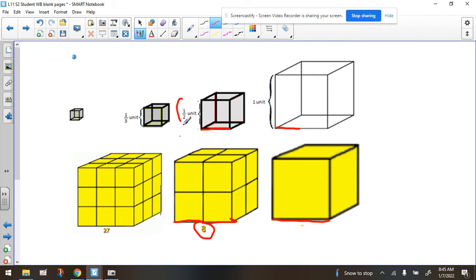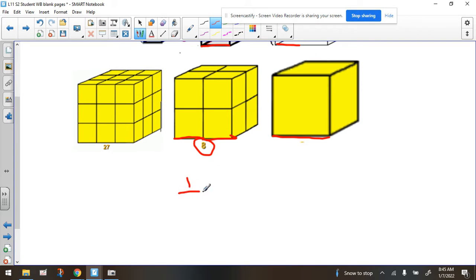If we cube this, because volume is cubic, we would do a half times a half times a half. And what does that equal? One times one times one equals one. Two times two equals four, and if we take the four and multiply it by two, we get eight.